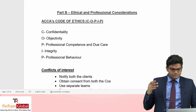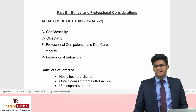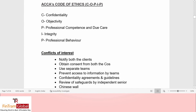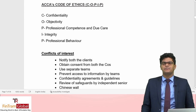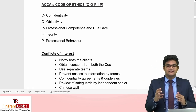Moving on to Part B — Ethics and Professional Considerations. The first key area is ACCA's Code of Ethics and Conduct, specifically the five fundamental principles of ethics, memorized using the mnemonic COPIP: C for Confidentiality, O for Objectivity, P for Professional Competence and Due Care, I for Integrity, and P for Professional Behavior.